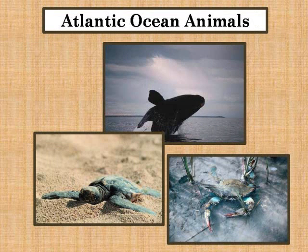Swamps and marshes have animals such as alligators, snowy egrets, great blue herons, and marsh snails. In the Atlantic Ocean off of the Georgia coast, you might see southern right whales, loggerhead sea turtles, and blue crabs.